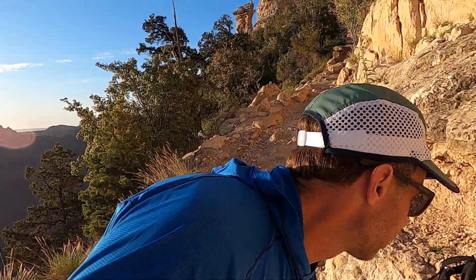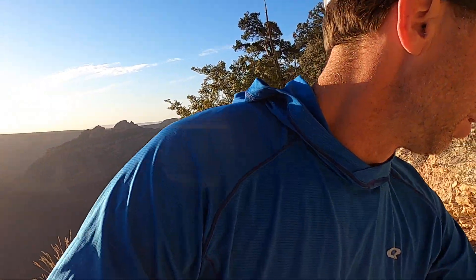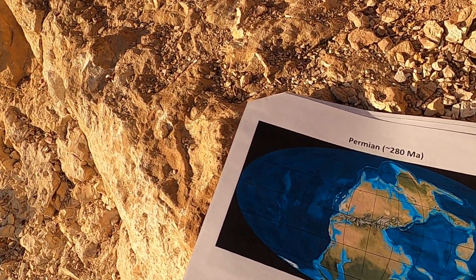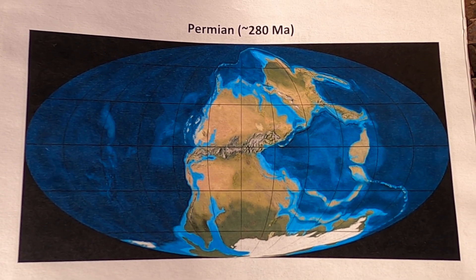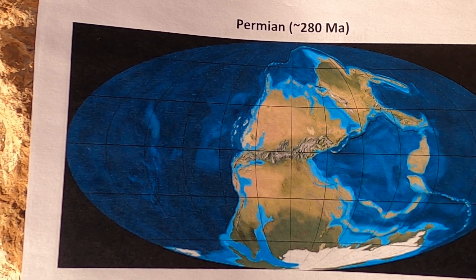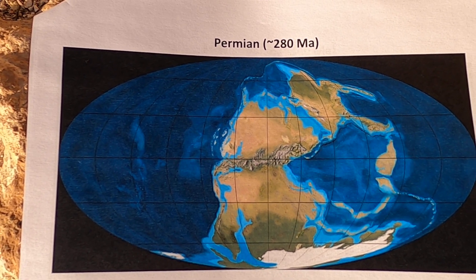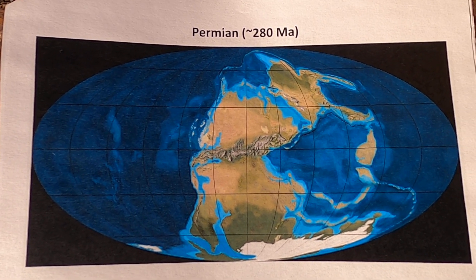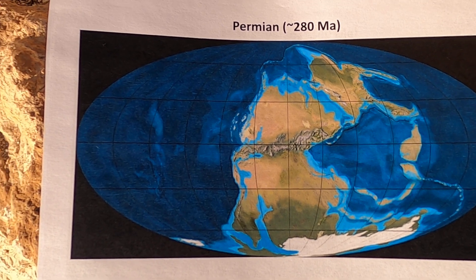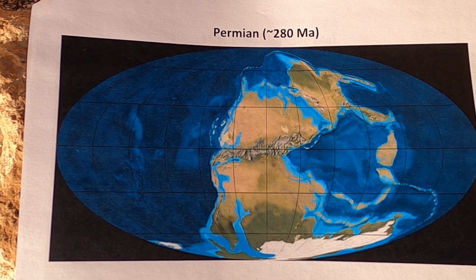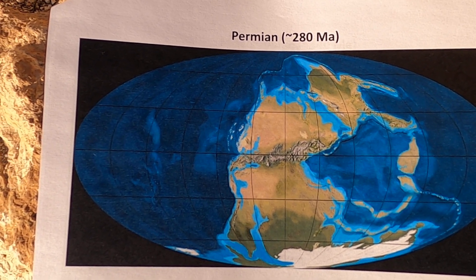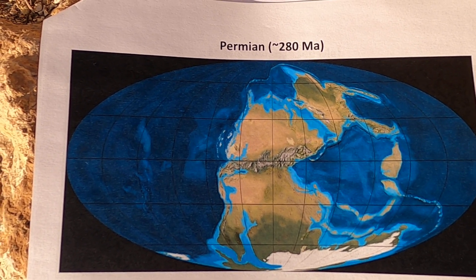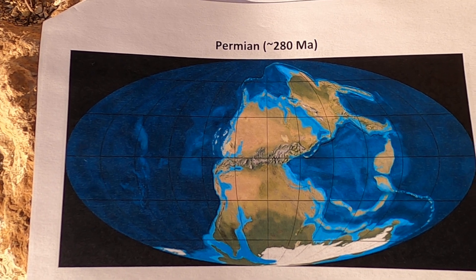Let's start with the big picture view. I've got a printout here of a paleogeographic map of the world during the Permian. The Kaibab limestone comes from a time period about 270 million years ago. At the time the Kaibab limestone was deposited, the world consisted of one big supercontinent — Pangaea.